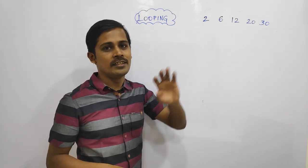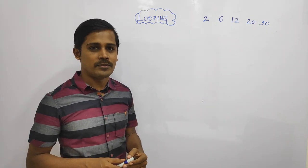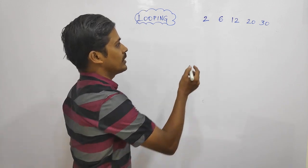2, 6, 18, 20, 30. How do you get this output? If you get this output, we will see this program.